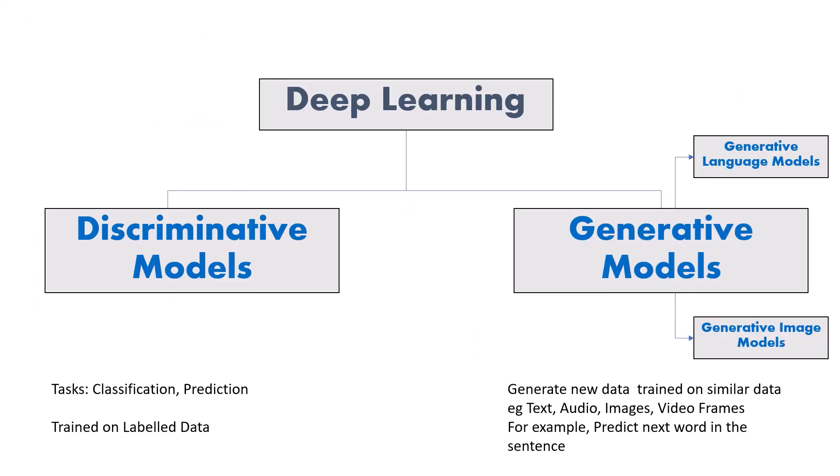In deep learning we have generative models and discriminative models. Generative AI is part of generative models. Discriminative models do tasks such as classification and prediction, and they are trained on labeled data. Discriminative models include artificial neural networks, convolutional neural networks, recurrent neural networks, LSTM, and other models.